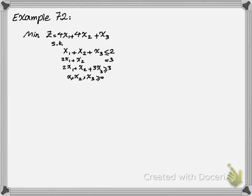The first method we're going to cover is normalization. In a min normal problem, everything should be greater than or equal. Therefore, we should revise the first and second constraints of this problem because they are not in the form of greater than or equal.